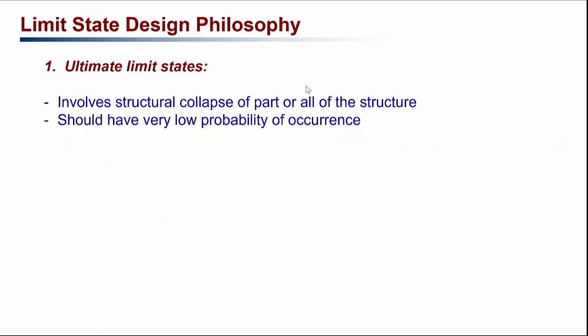The ultimate limit state, as the name suggests, is about the ultimate performance of the structure from the strength perspective. When the structure reaches or exceeds the ultimate limit state, the structure or part of the structure may collapse or fail. Since the ultimate limit state concerns structural integrity and can lead to loss of life or significant financial loss, we must ensure there is a very small probability that the structure will reach the ultimate limit state.